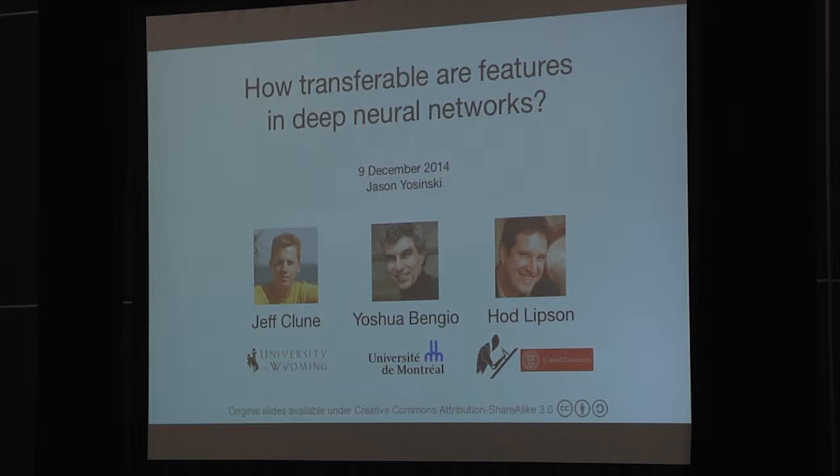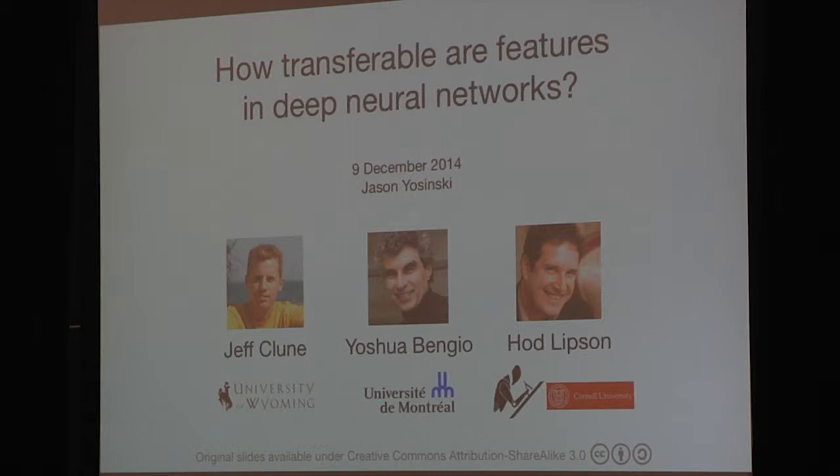Our last speaker for this session is Jason. The title of the paper is Quantifying the Transferability of Features in Deep Neural Networks. His co-authors are Hod Lipson from Cornell University, Jeff Klune, and Joshua Benzo from University of Montreal. My name is Jason Yosinski, and I'm going to tell you today about a study we did that helps us peer into the internals of deep neural networks to investigate the representations that they learned. Specifically, we're going to do this by looking at transferability of features within the neural network.